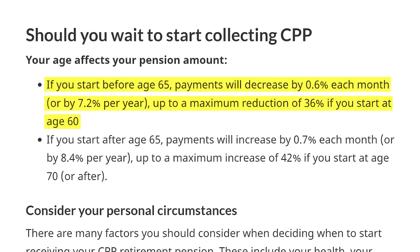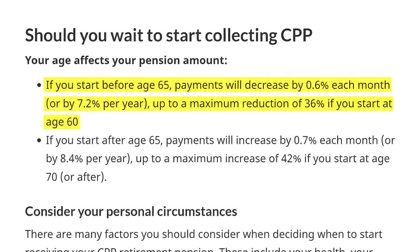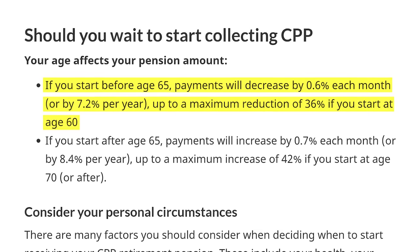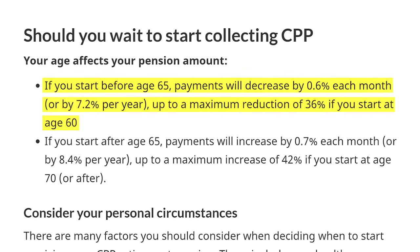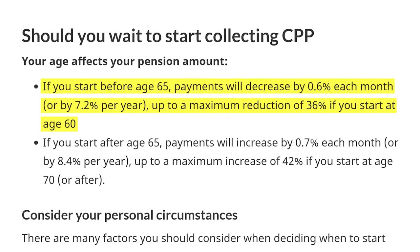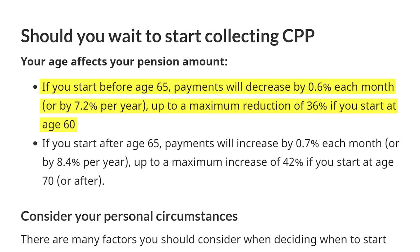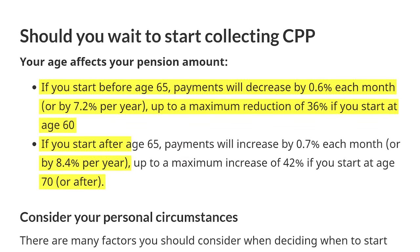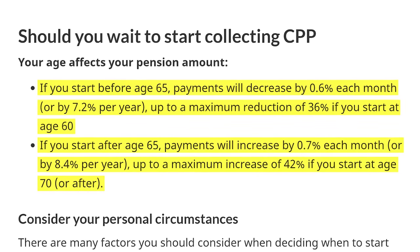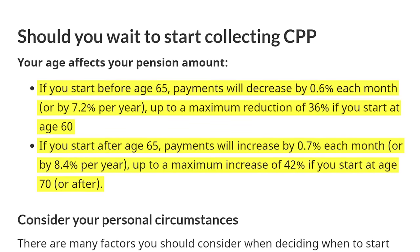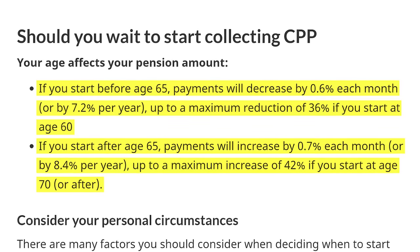CPP is a taxable benefit — you will pay tax on it. You can have CRA withhold tax at source to make sure you don't have a big tax bill at tax time. Work with your financial planner to figure out how much withholding tax you should have on your CPP amount. If you take CPP early, it's going to be reduced 0.6% every month before age 65. There's also a benefit to delaying CPP past age 65 — 0.7% per month, which is about 8.4% every single year you defer past 65.